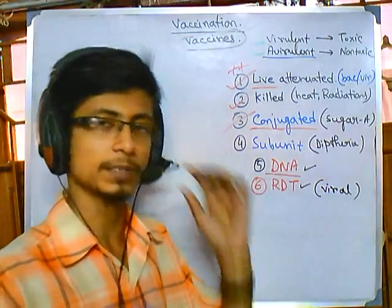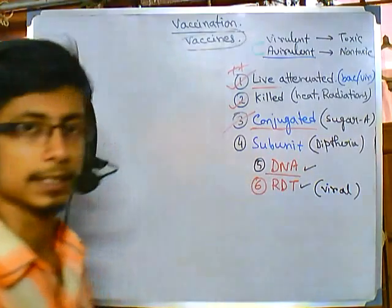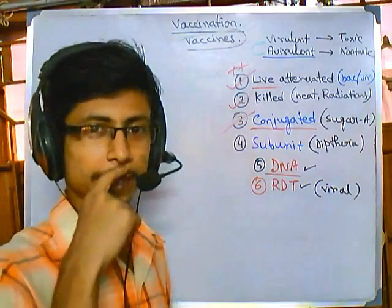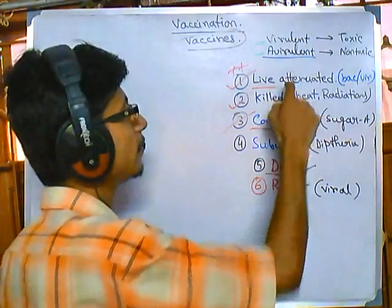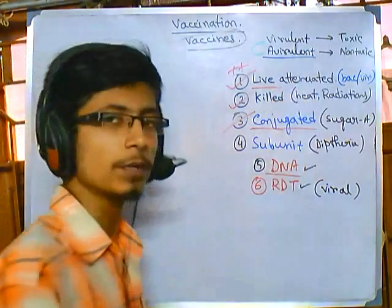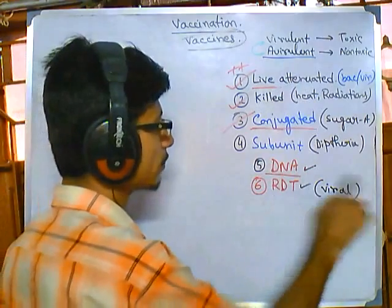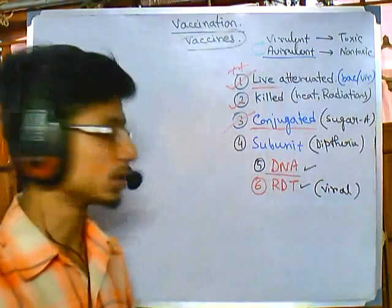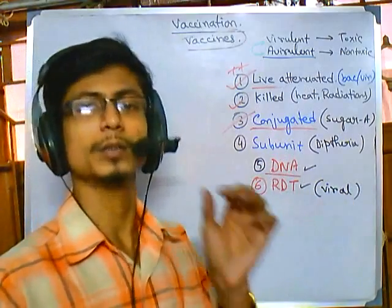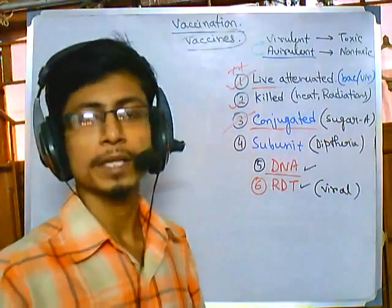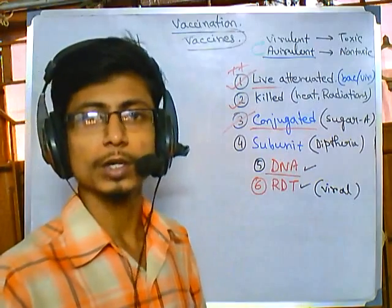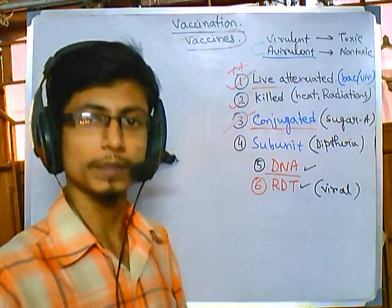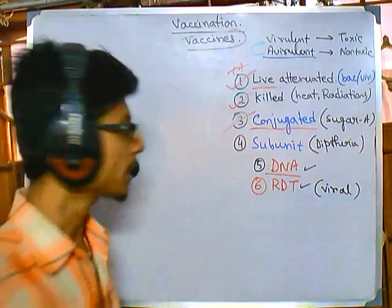A virus mixture can also act as a vaccine. The causative viral agent can be used as well. Similar to the live attenuated form, a viral RDT-type vaccine can also be of the live attenuated type, because the virus will be replicating but will not cause any disease — because we will modify its genes. We are going to see that later.